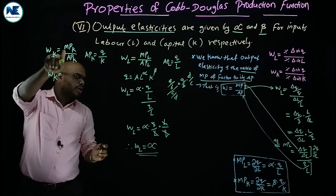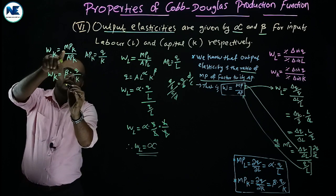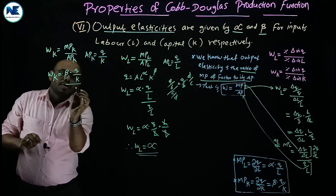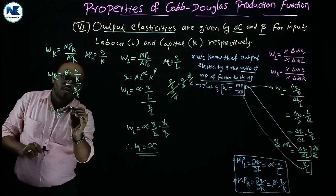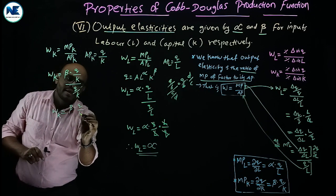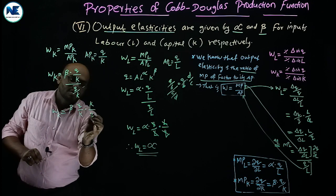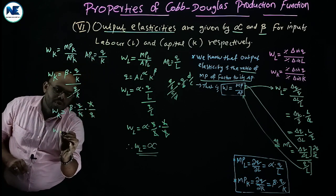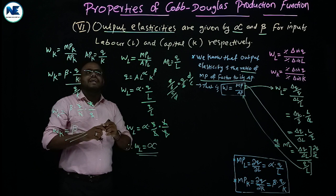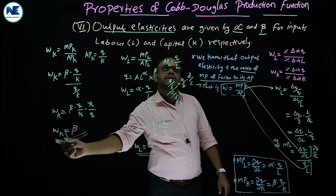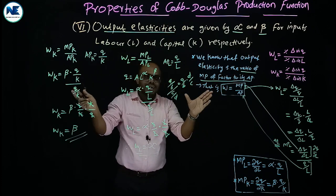For output elasticity of capital: (beta × Q / K) ÷ (Q / K) = beta × Q/K × K/Q. Q and Q cancel, K and K cancel. Therefore, output elasticity of capital is equal to beta. We have proved that the output elasticity of capital input under the Cobb-Douglas production function is beta.